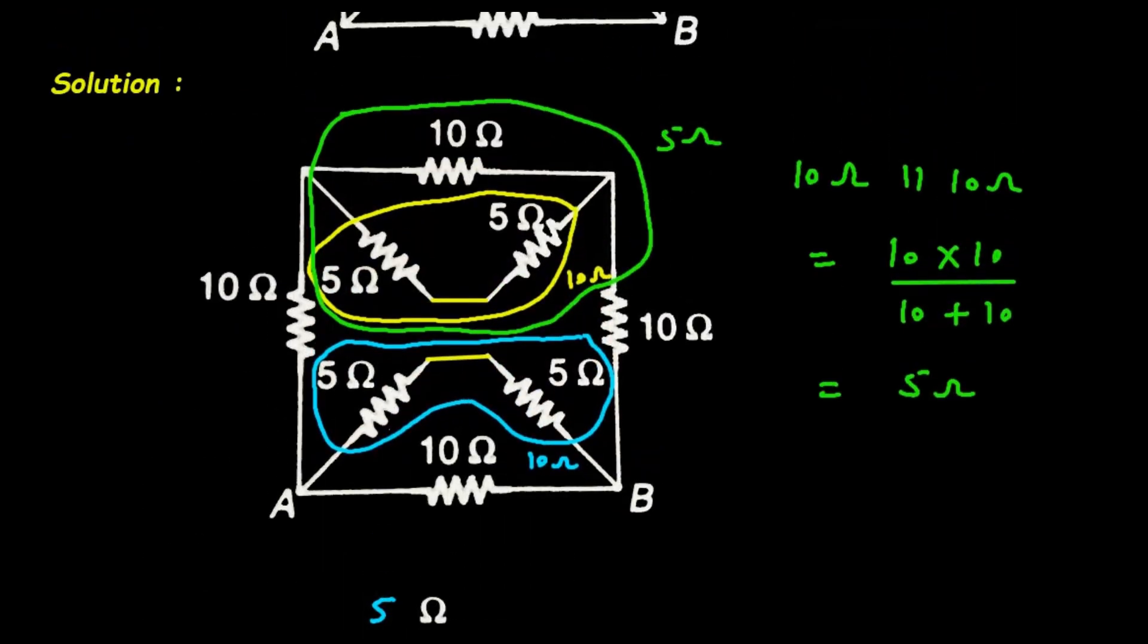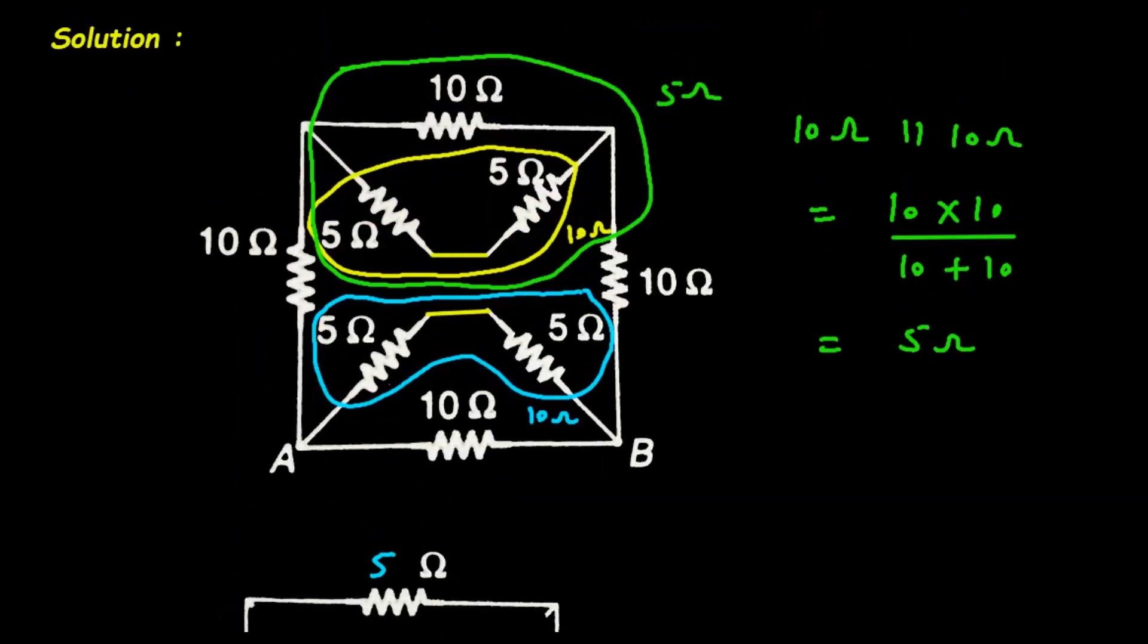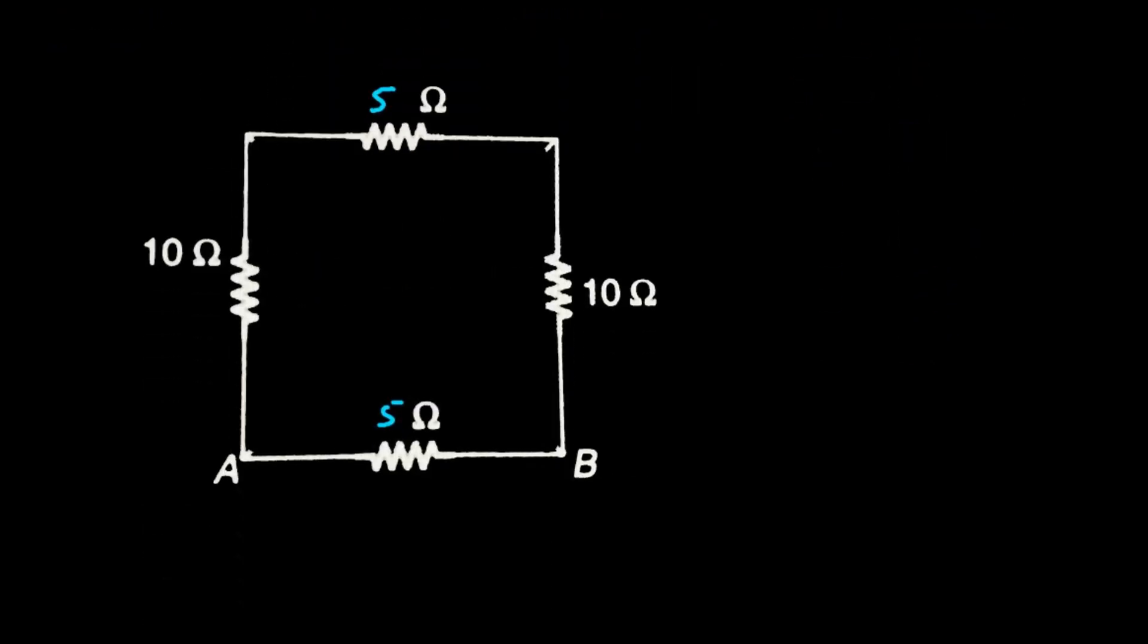And then next, here also this 5 ohm, we can replace them by a single resistance of 5 ohm. It will be simply 5 ohm. Now this 5 ohm, this 10 ohm they are connected in series.